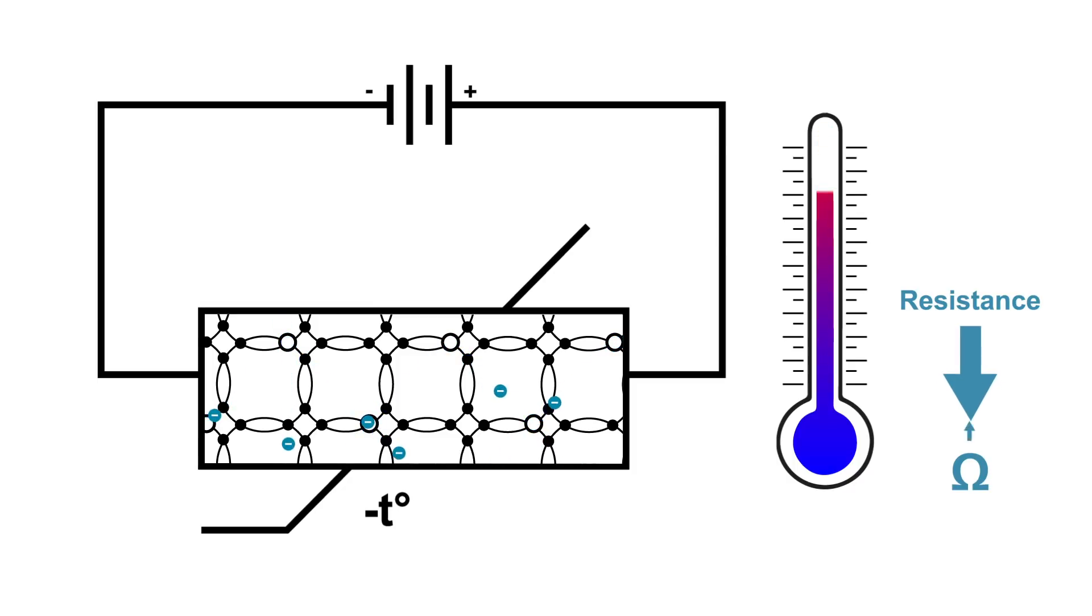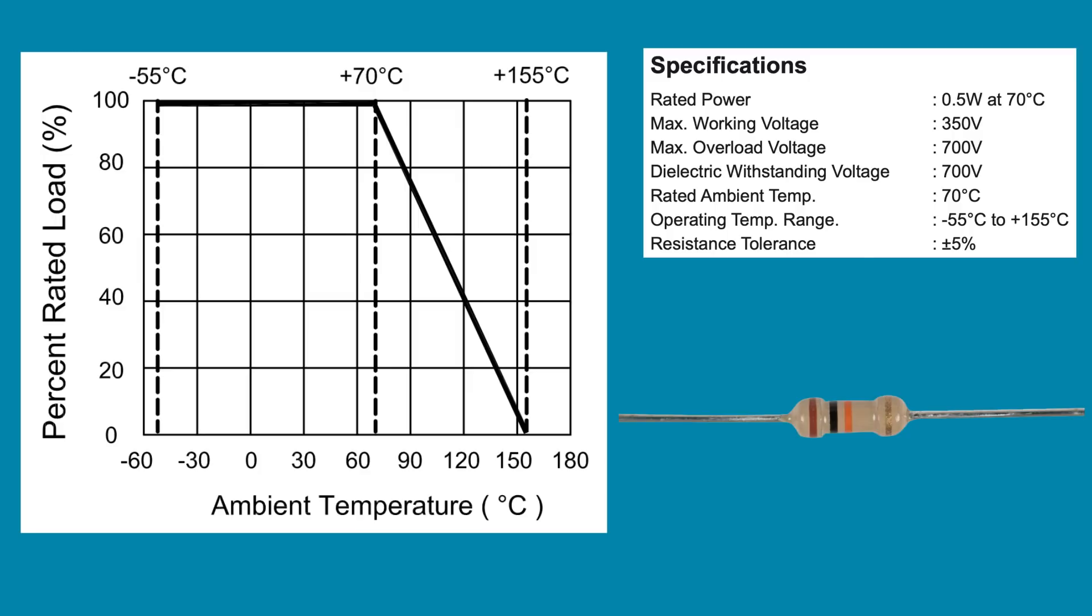When the thermistor gets colder, the electrons slow down, making it harder for current to flow with an increased resistance. Fixed resistors may also be affected by temperature changes. But as you can see here, they maintain a consistent resistance until they reach a high enough temperature, here about 70 degrees Celsius, where their resistance begins to degrade in a linear fashion.